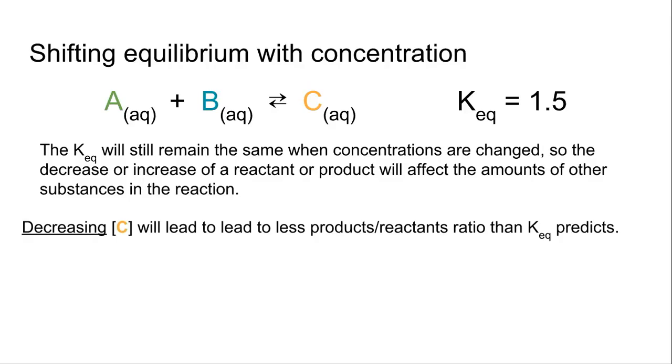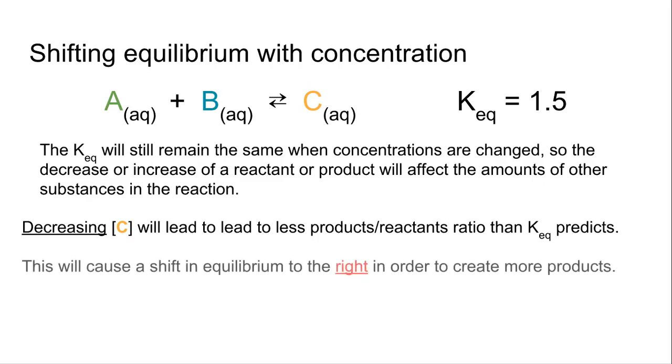So if I remove C, A and B are going to want to replace that. So what that'll cause is it'll cause a shift in equilibrium to the right in order to create more products. Since we just got rid of some of the products, A and B will actually start to try to form more of that product.